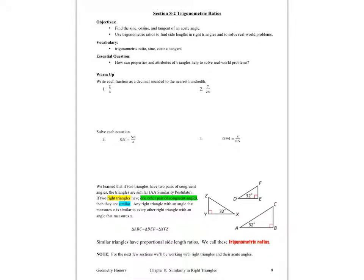Hello ladies and gentlemen, this is Ms. Cook, and we're now in section 8-2, Trigonometric Ratios. We have two objectives: find the sine, cosine, and tangent of an acute angle, and use trigonometric ratios to find side lengths in right triangles and to solve real-world problems. Our vocabulary includes trigonometric ratio, sine, cosine, and tangent.